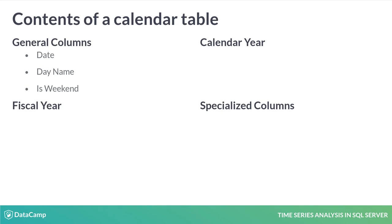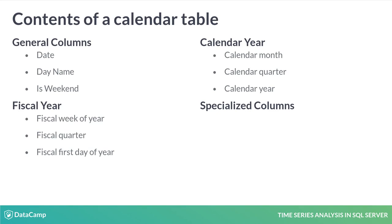Second, we have calendar year information. Most business processes work off the calendar year, so we care about things like being in the third calendar quarter or calendar year 2019. Not all business processes work off a calendar year, however. Some work off a fiscal year. Calendar tables let us store information for both fiscal and calendar years, and where they differ.